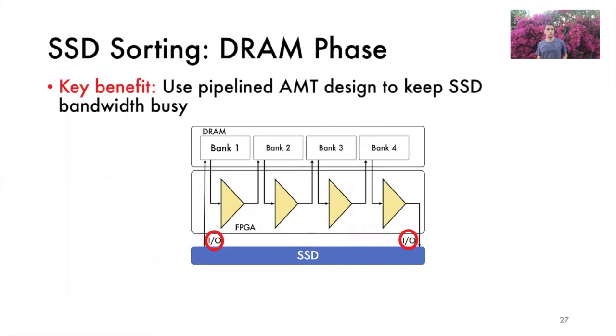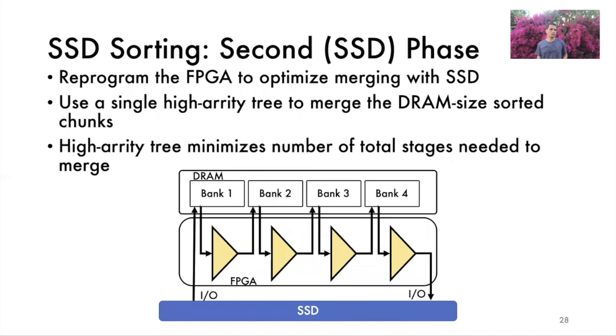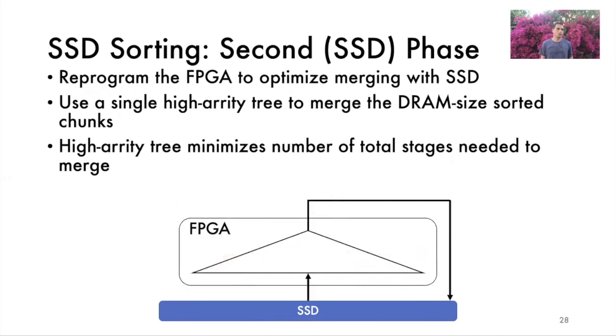To reiterate, in tree pipelining, the last tree in the pipeline outputs a sorted array during every stage. This setup keeps the IO bus busy and minimizes the impact of slow IO. After the first phase, the array is organized into many DRAM-sized sorted chunks. This means the DRAM is too small to mask the slow SSD bandwidth during the remaining merge stages. As we cannot rely on DRAM bandwidth to get good performance in the second phase, we can reduce sorting time only by minimizing the remaining number of merge stages. To that end, we reconfigure the FPGA to run a single high-arity merge tree during the second phase. We then use this tree to recursively merge the DRAM-sized sorted chunks. For example, using a tree of arity L equals 256, we can merge up to 4,000 terabytes of data in only two stages within the second SSD phase.